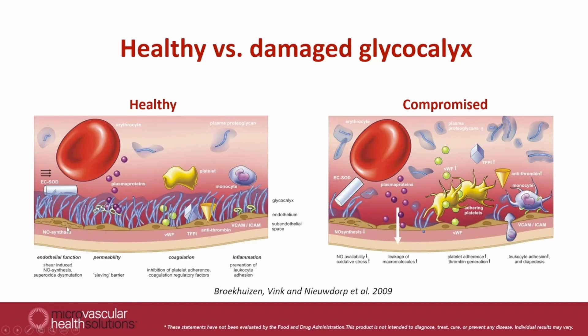One of those processes is to stimulate the enzyme nitric oxide synthase. When blood flow increases and these glycocalyx structures bend more forward, they trigger the endothelium to start producing nitric oxide. At the same time, these structures are also binding sites for important protective enzymes like superoxide dismutase — an enzyme that captures and inactivates oxygen radicals that are locally produced and might damage your endothelium and glycocalyx.